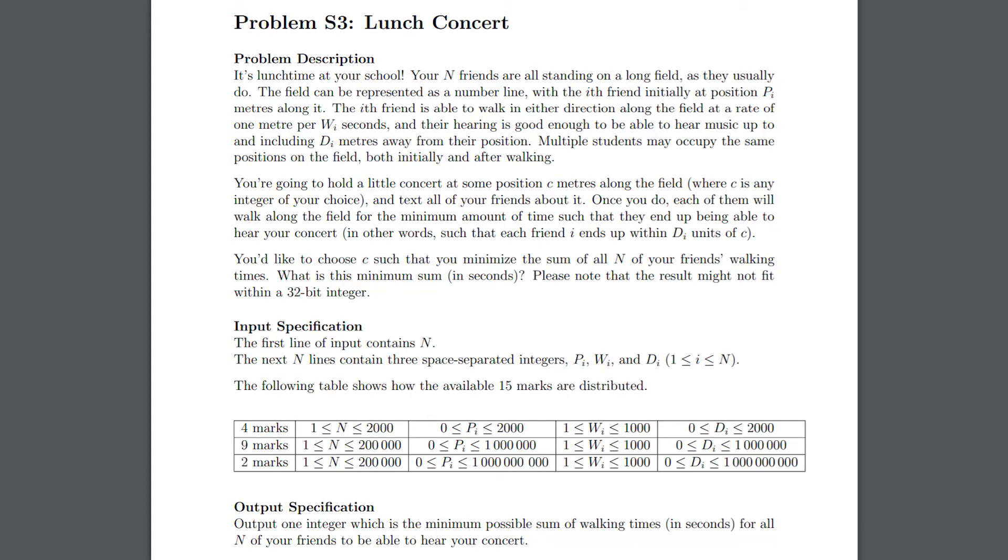This problem says that you have N friends standing along a number line, each with a different hearing ability and walking speed. Your job is to place a speaker in the optimal position such that all your friends are close to it. For every friend, you are given their position, the minimum distance from which they can hear the speaker, and the time it takes them to walk one meter.